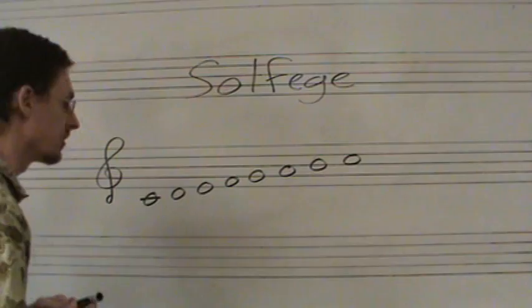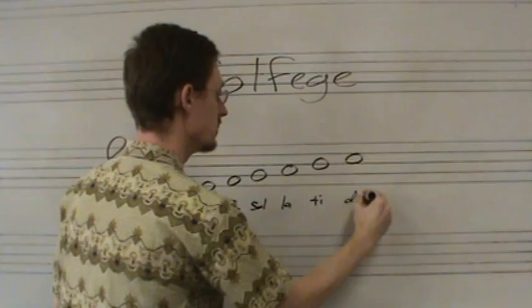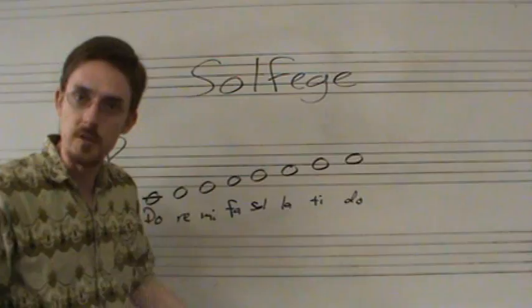And these are the syllables: do, re, mi, fa, sol, la, ti, do. Those are all of the solfege syllables — do, re, mi, fa, sol, la, ti — and then we recycle at the octave back to do.